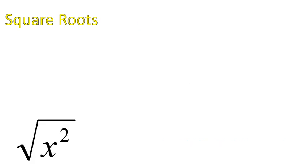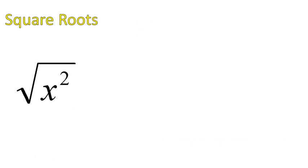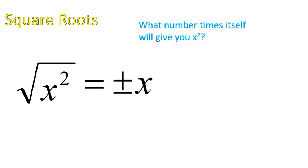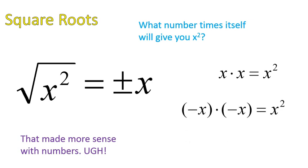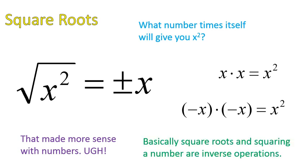The way this would look like with variables is the square root of x squared is what number times itself will give you x squared? Plus or minus x. I know this makes more sense with numbers, but let's go through it. So x times x is x squared. Negative x times negative x gives you x squared. Basically, square roots and squaring numbers are inverse. That's the importance that I'm trying to show you here.